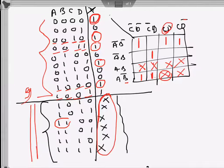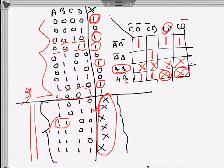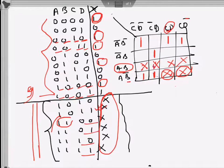Then a b-bar c d-bar maps to this cell. The K-map columns go c-bar d-bar, c-bar d, c d-bar, and c d — so the layout finishes with c-bar d here, c d-bar here, and finally c d here. All of these marked cells for a b are don't cares.